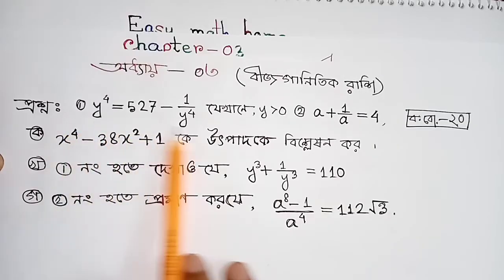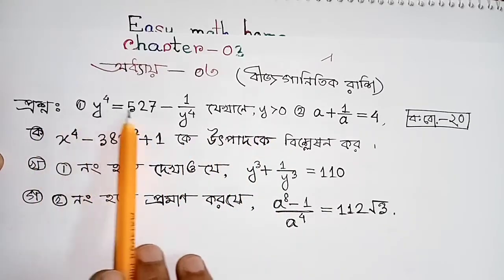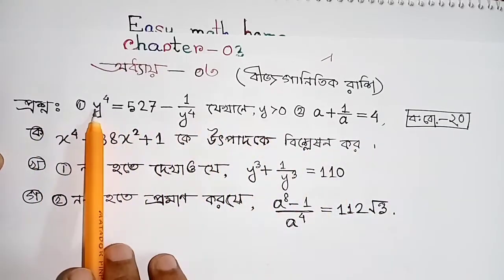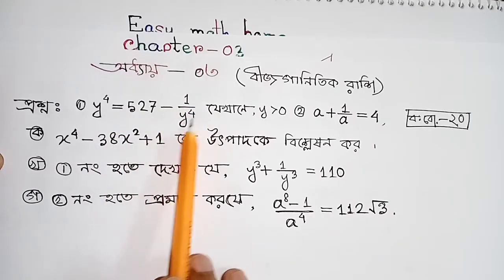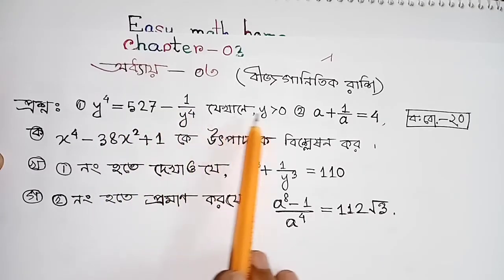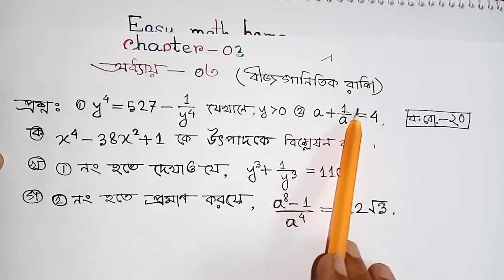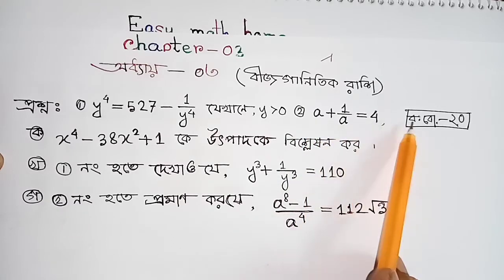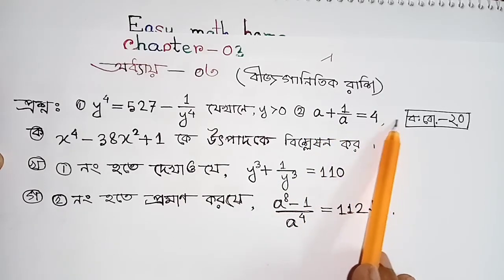The first question: y to the power 4 is equal to 5·7 minus 1 by y to the power 4, where y is greater than 0. The second number is equal to a plus 1 by a equals 4, where a is greater than 0.